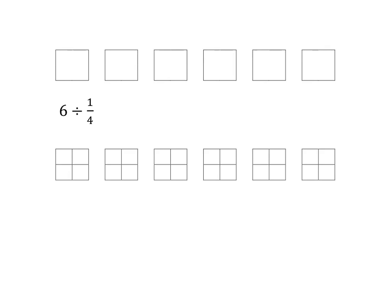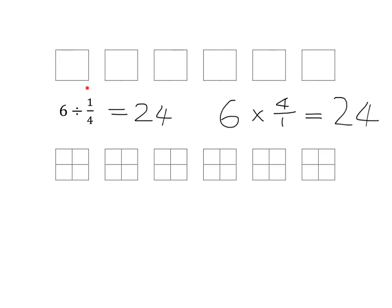To help me answer the question 6 divided by a quarter, what I've done is I've taken those 6 wholes and divided each of them up into quarters. Now I can easily answer the question: how many quarters are there in 6? In each one I see there are 4 quarters. So I have 4, 8, 12, 16, 20, 24 as my answer. So if I want to ask how many quarters are there in 6, the answer is 24. Can you see that this is exactly the same as if I had said 6 multiplied by 4?